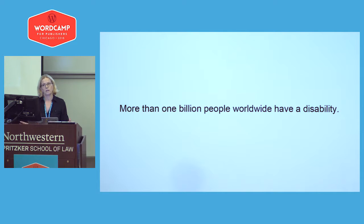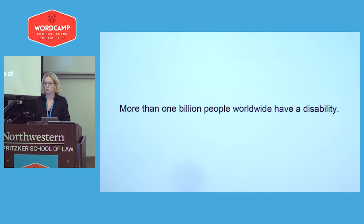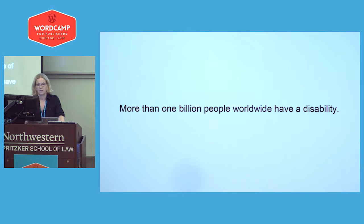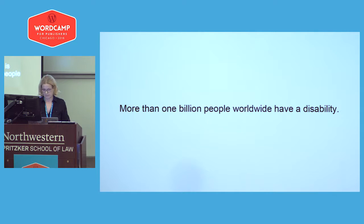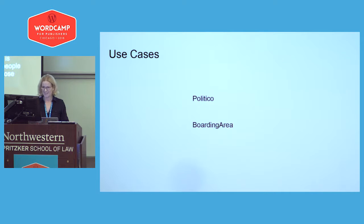On the importance of accessibility: more than 1 billion people worldwide have a disability, according to the World Bank — that is more than one in seven people, or roughly 15%. Now those people aren't all on the internet, but many of them will be.